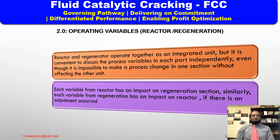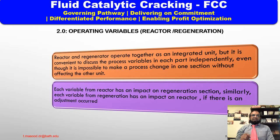The reactor and regenerator operate together as an integrated unit, but it is convenient to discuss the process variables in each part independently. It is impossible to make a process change in one section without affecting the other. The major variables are the reaction severity and regenerator severity, and the effect of each variable on plant operation can be discussed together with its relation to other process conditions.